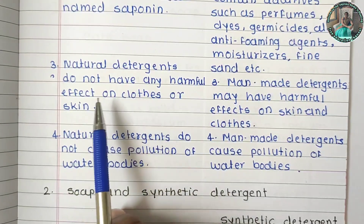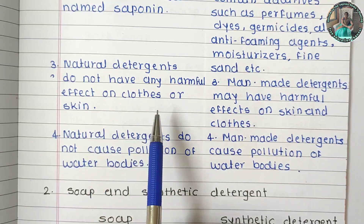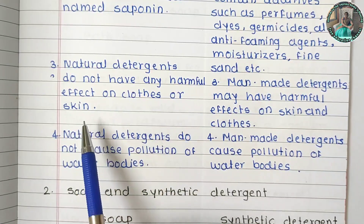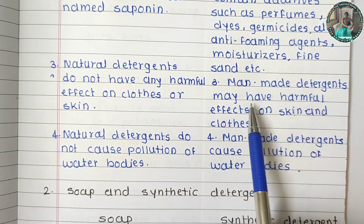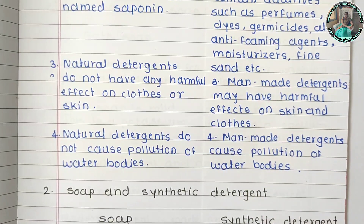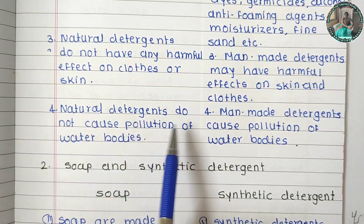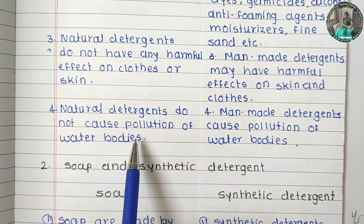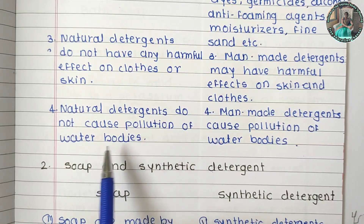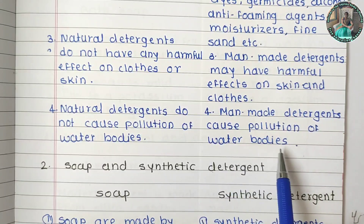Natural detergents do not have any harmful effects on clothes or skin, whereas man-made detergents may have harmful effects on the skin and clothes. Natural detergents do not cause pollution of water bodies, but man-made detergents do cause water pollution.